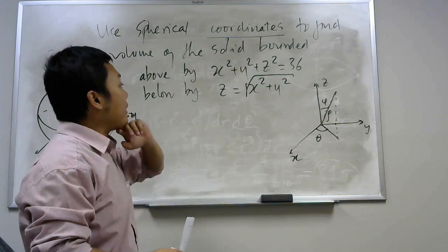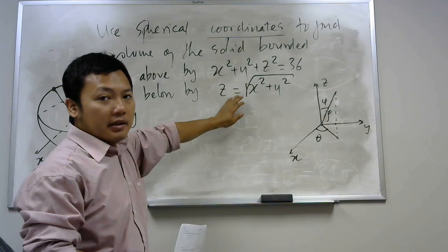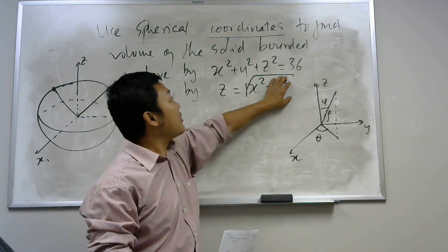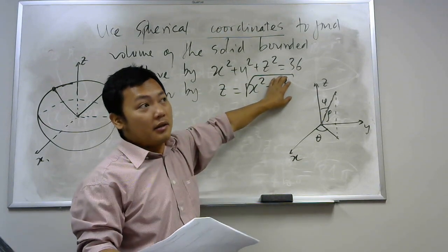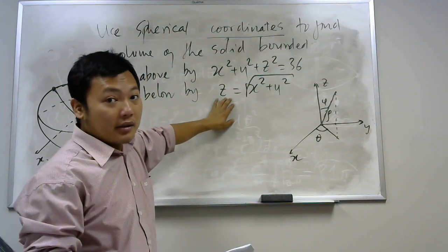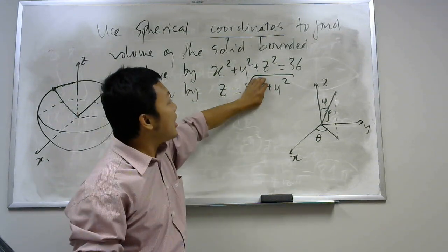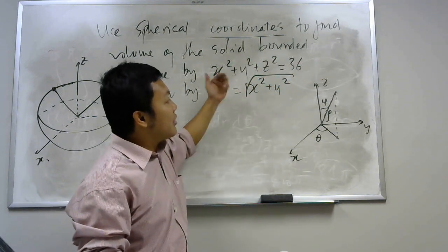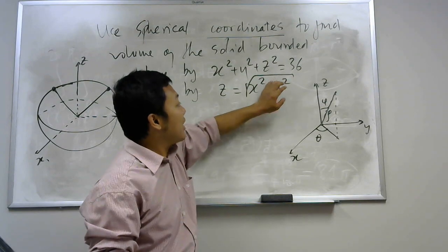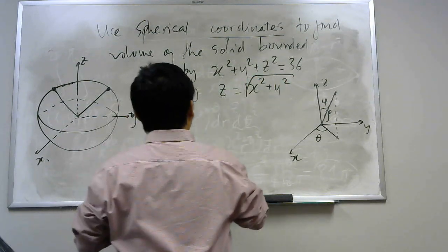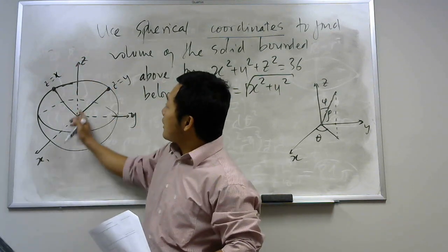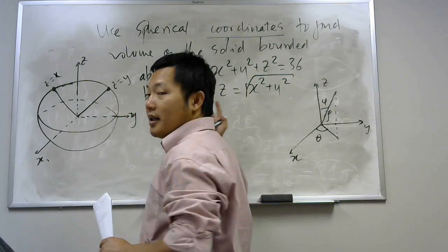It feels easy, but what is this surface? In order to see the graph, suppose I put y equal to 0. Then I have z equal to the square root of x squared, which is just the absolute value of x. So on the xoz plane, you have straight lines. Similarly, you can put x equal to 0 and see z equals the absolute value of y. So on the xoz plane z equals x, and on the yoz plane z equals y — this is some cone.